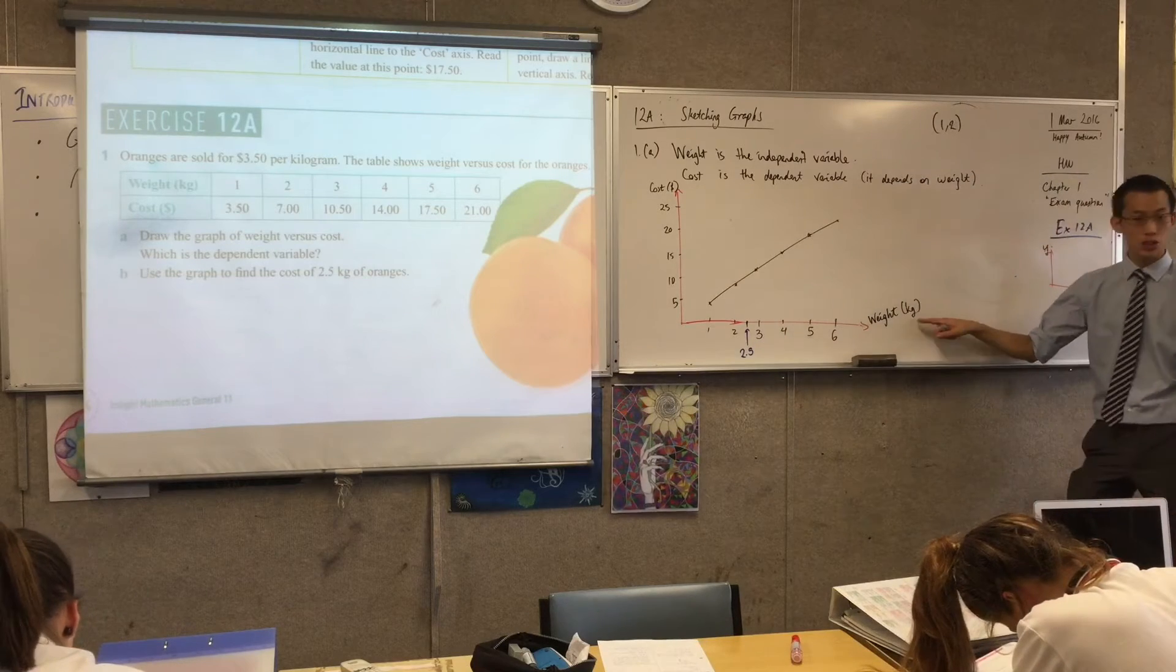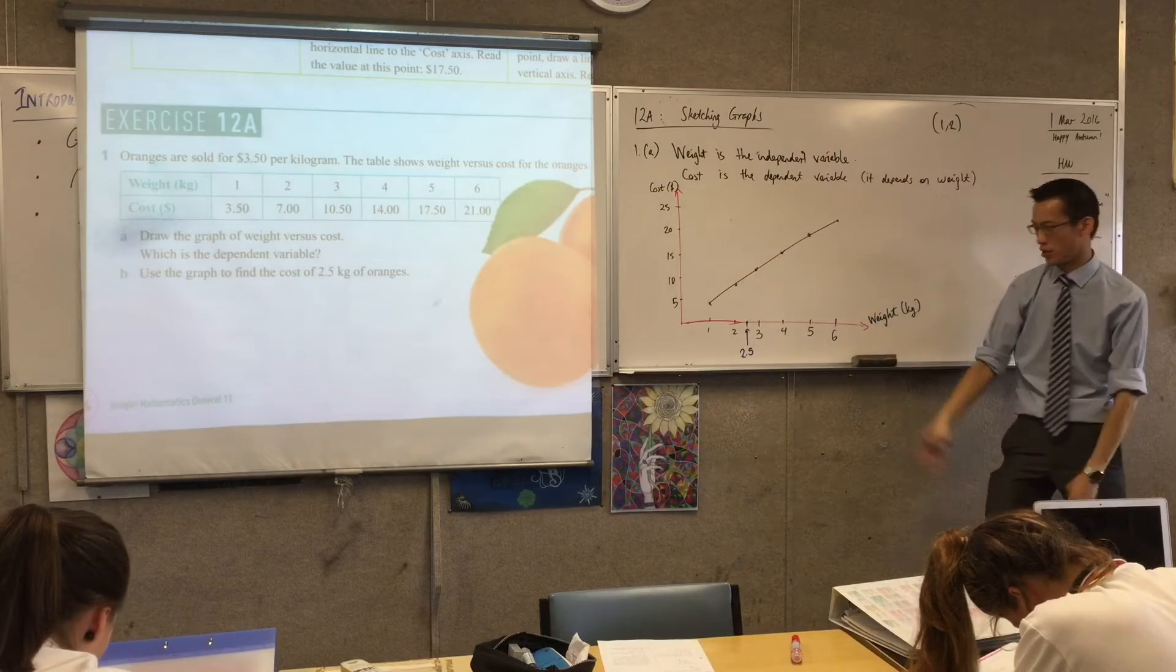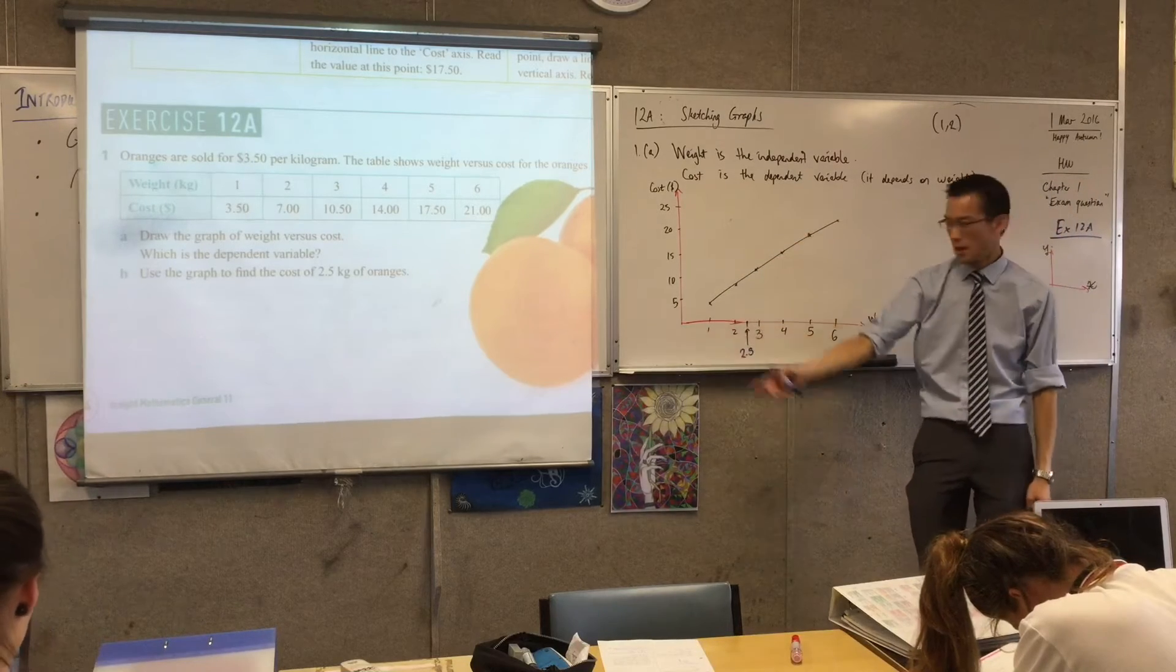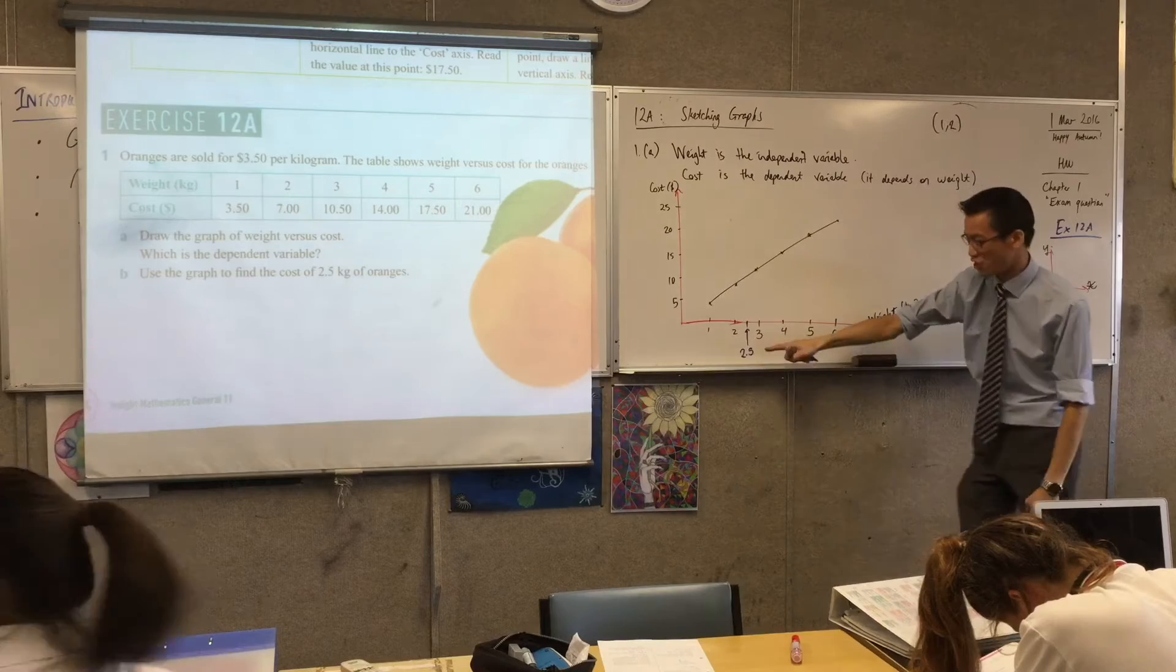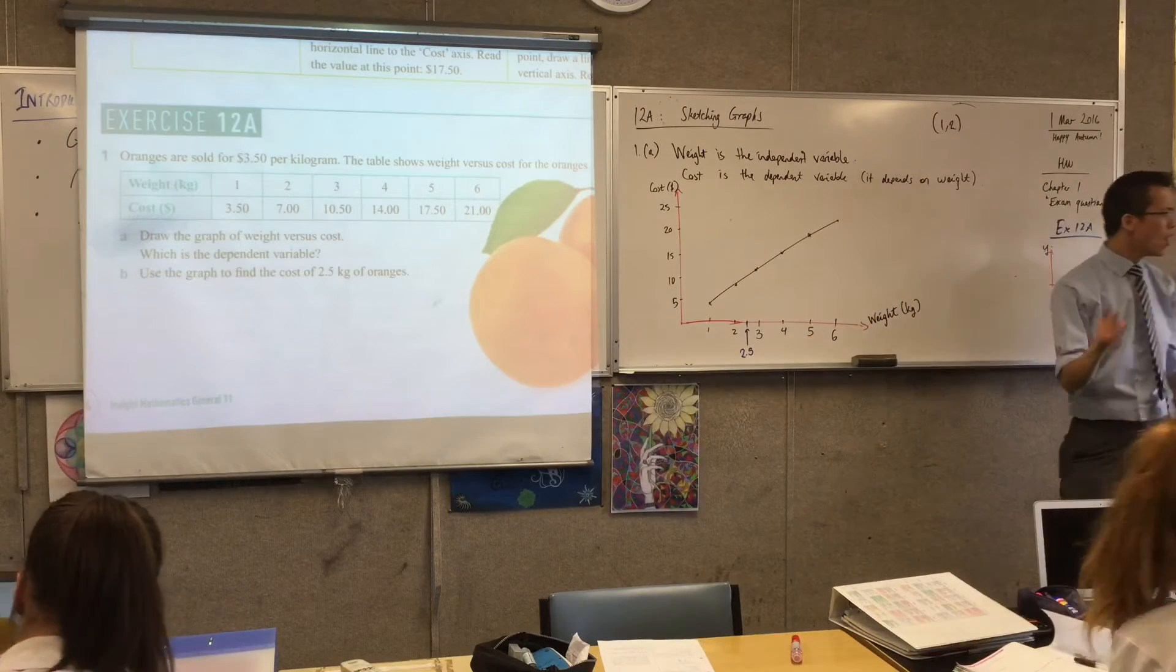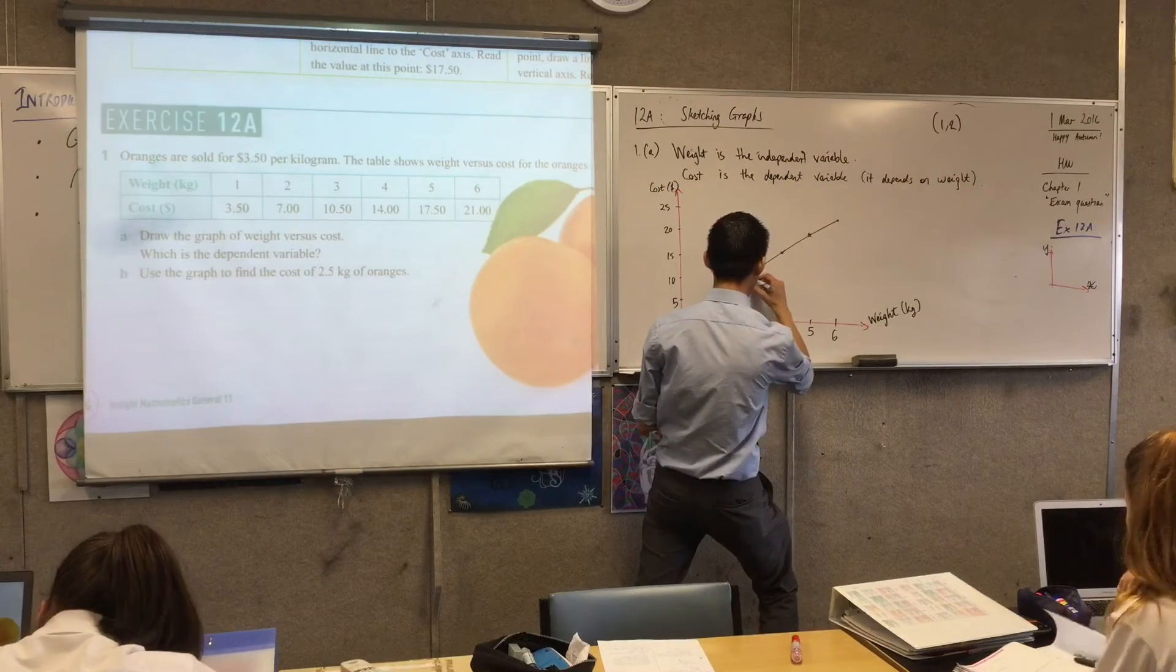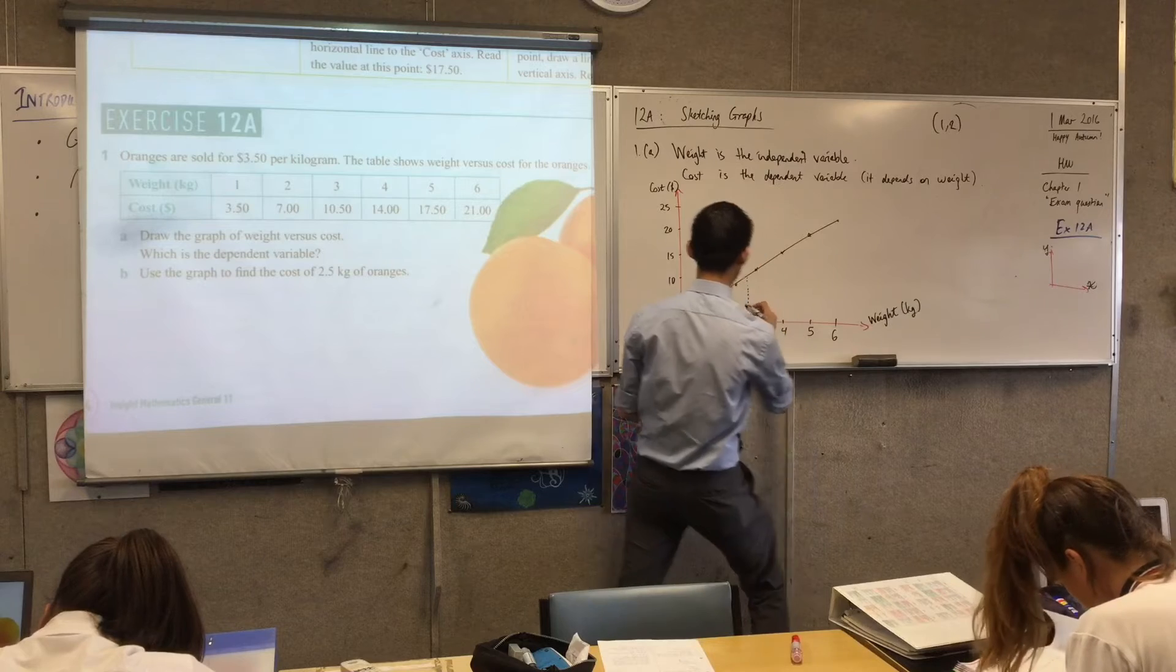By the way, one of the reasons why we put units over here on the labels of the axes is so we don't have to put units for every single one of these numbers. So I don't have to say 2.5 kilos. I just say 2.5 and the kilos come from the axes. What I'm going to do is read up from 2.5. So you may like to get your ruler out and draw up a line there.